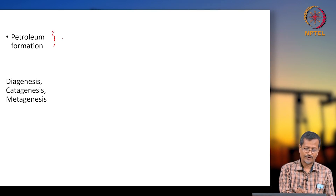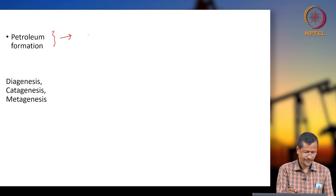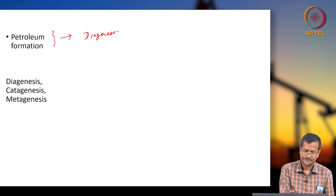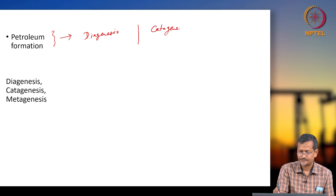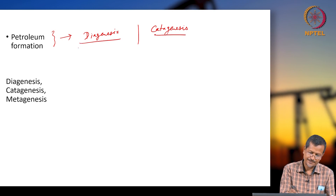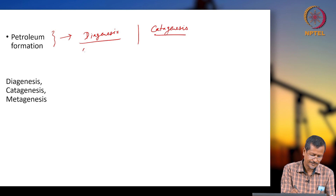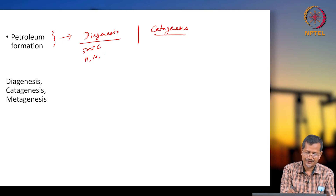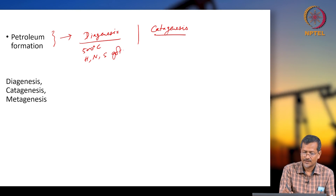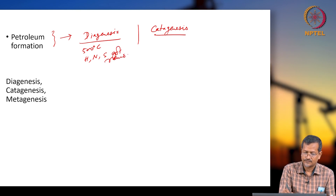In petroleum formation, you will have diagenesis and catagenesis. Diagenesis occurs at around 500 degrees centigrade, where hydrogen, nitrogen, and sulphur get removed.